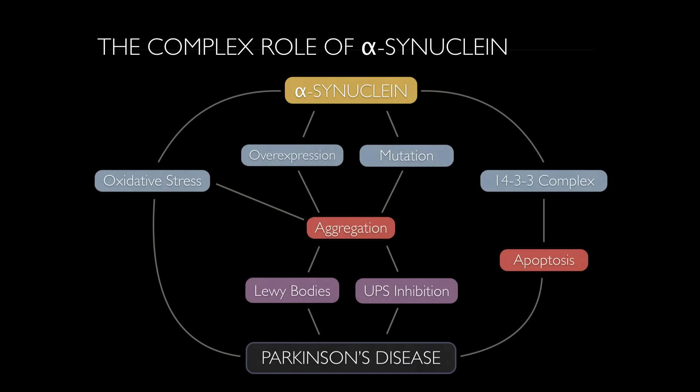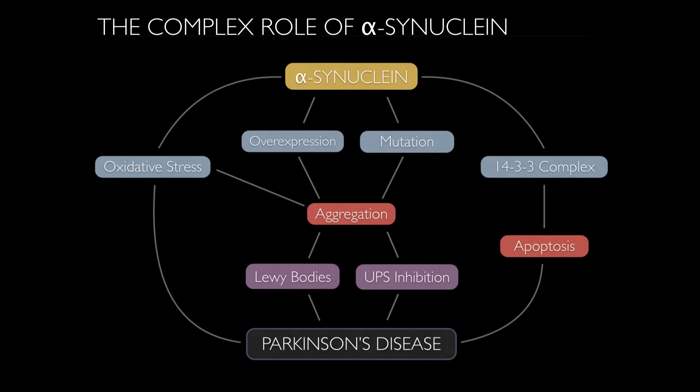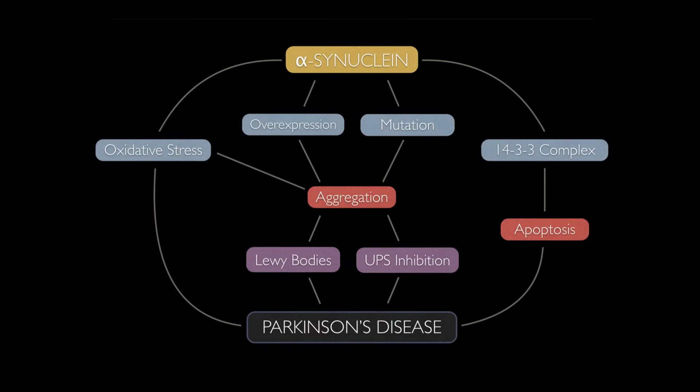It is important to note that the aforementioned example is only one of many proposed mechanisms for the role of alpha-synuclein in PD. Other prominent hypotheses include interactions of alpha-synuclein with the ubiquitin proteasome system and the oxidative stress pathway. This complexity suggests that alpha-synuclein contributes to PD pathogenesis in a multi-mechanistic pathway.